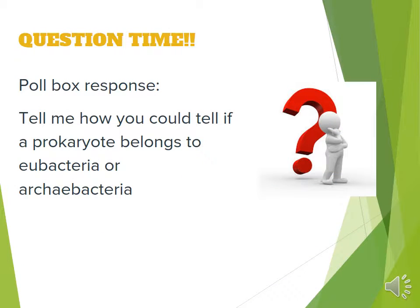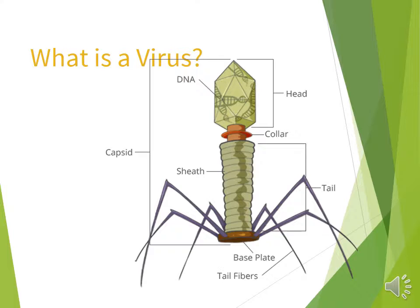So how could you tell if a prokaryote belongs to Eubacteria or Archaebacteria? Eubacteria are true bacteria and Archaebacteria are ancient bacteria. Archaebacteria are part of the extremophiles — they live in extreme environments. They also do not infect humans and they don't have peptidoglycan on the outside. The Eubacteria can be both helpful and harmful to humans, and they have peptidoglycan on their outer cell wall.